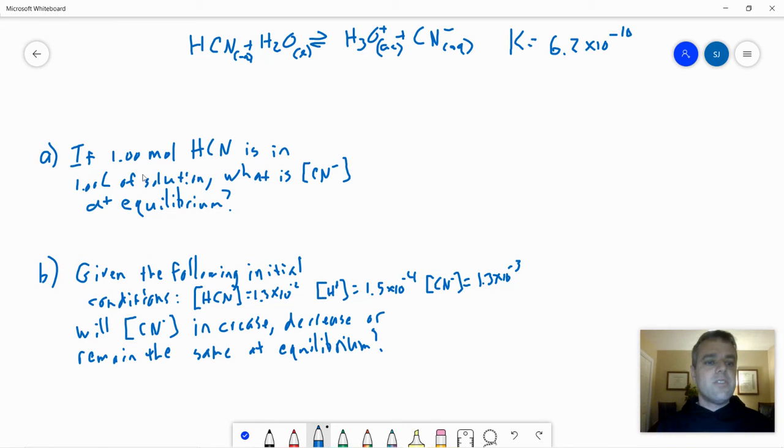So it says, if one mole of HCN is in one liter of solution, what is the cyanide concentration at equilibrium? So we have our reaction. We need an equilibrium expression. That's going to say that K equals the concentration of H3O plus times the concentration of CN minus divided by the concentration of HCN. All of our coefficients happen to be ones, and water is a liquid, so we're going to ignore it. We set up an ICE chart.